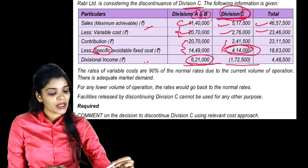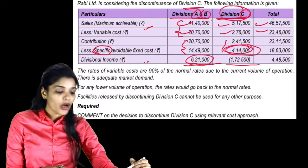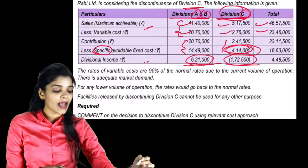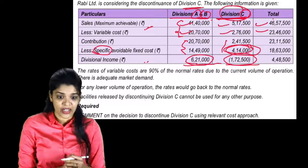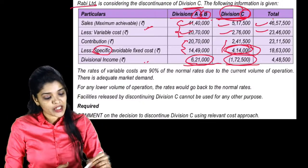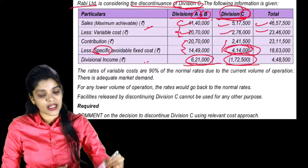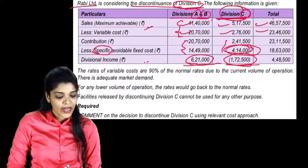This is 6,21,000 for Division A and B, and Division C has a loss of 1,72,500. That's why Rabi Limited is perhaps thinking to discontinue Division C, because it's giving a loss.